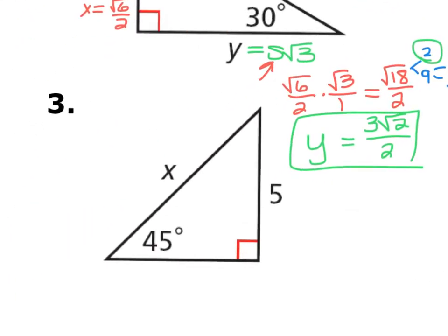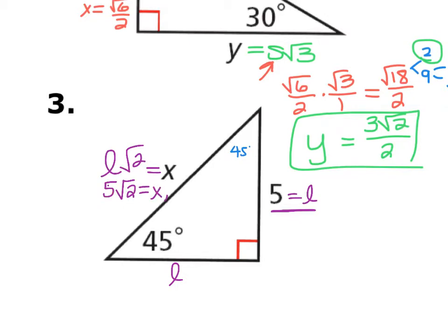Question 3 has a 45° angle, making it a 45-45-90 triangle. Opposite the 45° angles are the L legs and opposite the 90° is L√2. Since one leg is 5, X = 5√2.